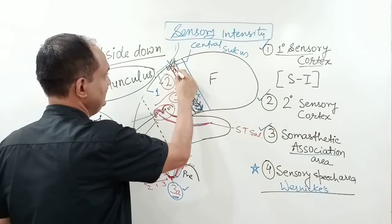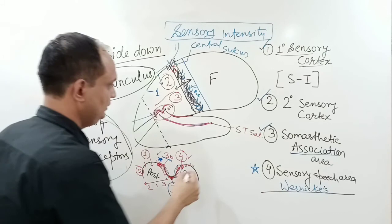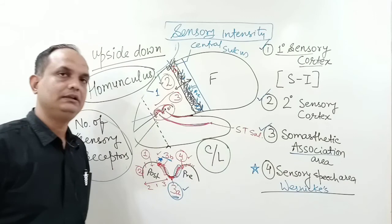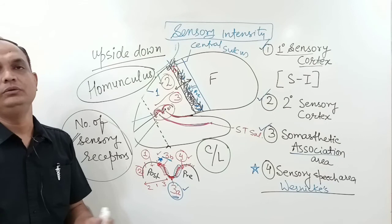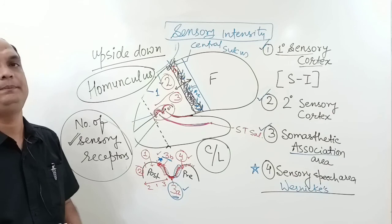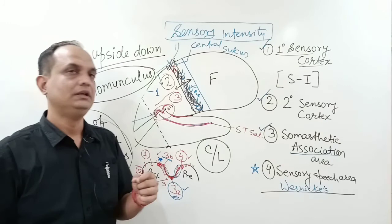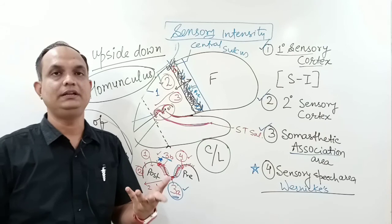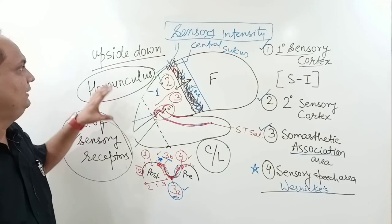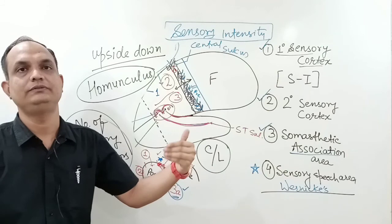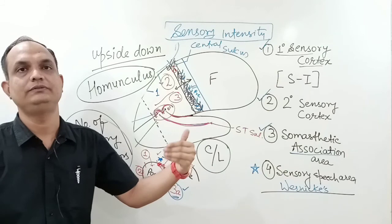If there is a lesion in the primary sensory cortex, there is loss of sensation in the contralateral side of the body — except for crude touch and crude pain, because the thalamus itself has some capacity to sense crude touch and crude pain. However, fine touch, two-point discrimination, and point-to-point identification are functions of the primary sensory cortex and are lost. So a lesion in the primary sensory cortex always causes loss of fine sensation in the opposite half of the body due to fiber crossing.